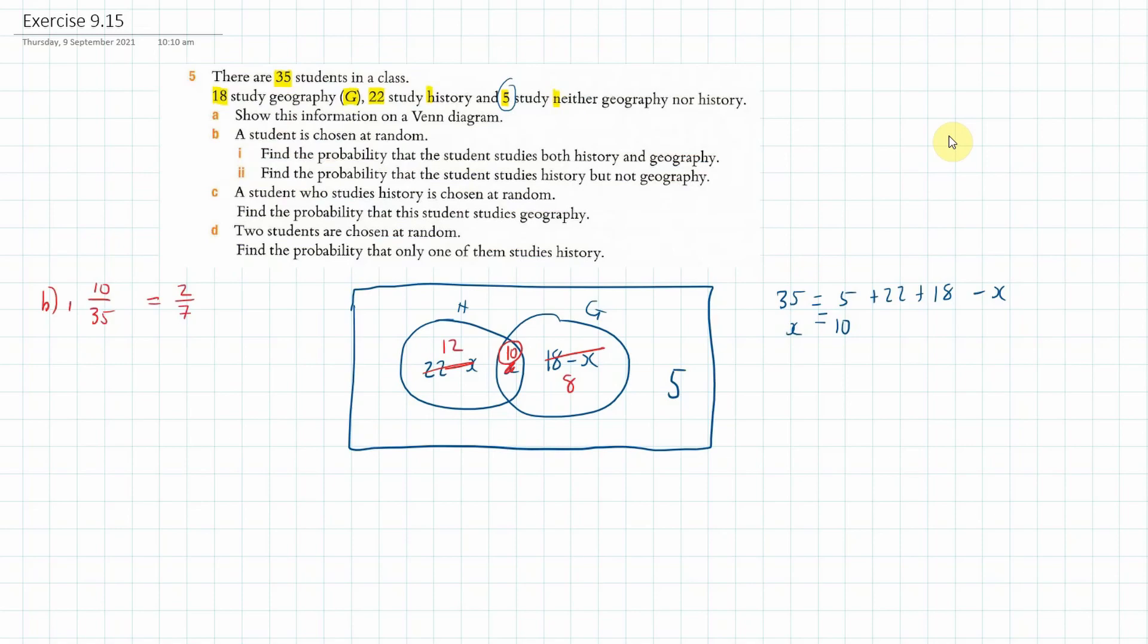Okay, now the second one here is Part 2. We're trying to find the probability the student studies History but not Geography. So that will be the 12 students that study History but not Geography, and that's out of 35. So can we simplify that at all? I don't think so.